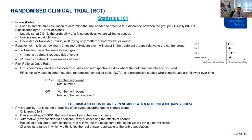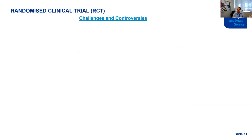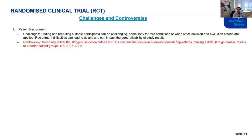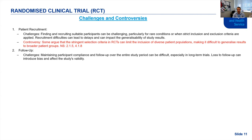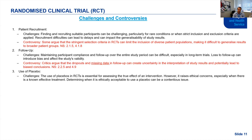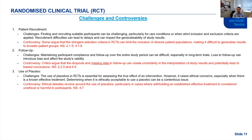Moving to challenges and controversies seen in ethics committees — patient recruitment is always a challenge, and some argue that strict inclusion criteria limit diverse populations, relating to National Statement 2.1.5 and 4.1.8. Follow-up can be challenging; I always ask: what is the plan for missing data? Have dropouts been considered in the sample size calculation? That relates to National Statement 2.2.5 and 4.9.